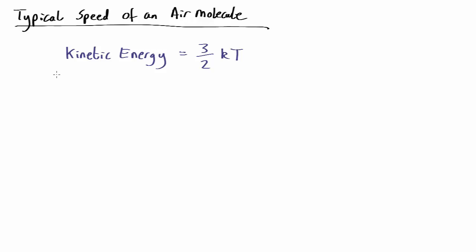Well, we know that the kinetic energy on average of the air molecules in the room is three halves kT. We also know that kinetic energy is half mv squared. So we set them equal, half mv squared, the definition of kinetic energy, equals three halves kT from the definition of temperature.